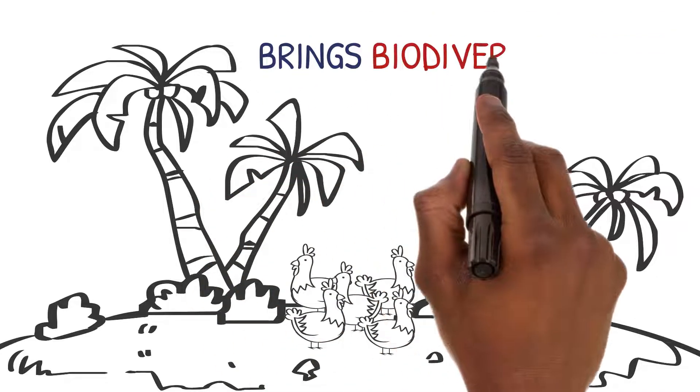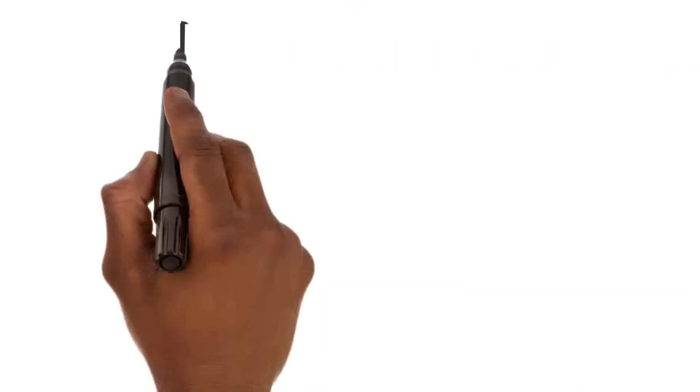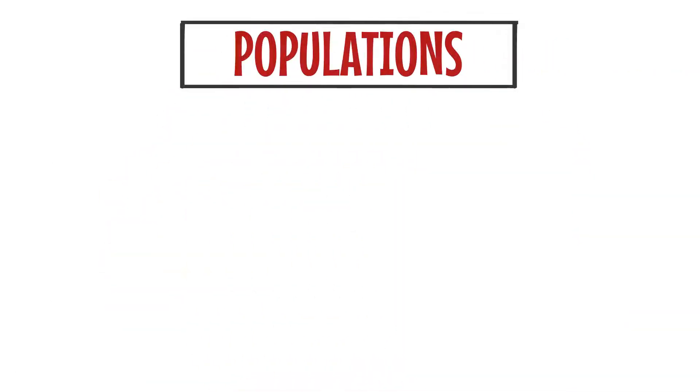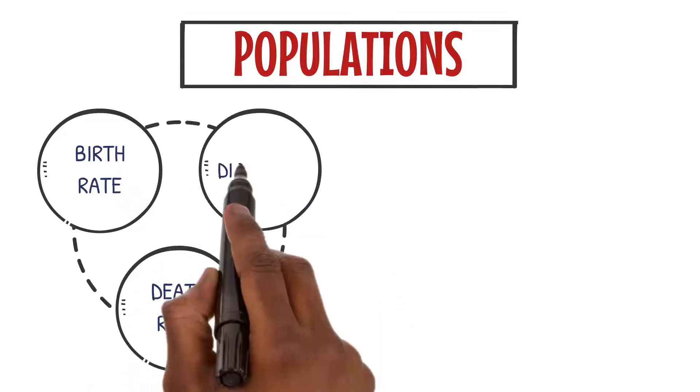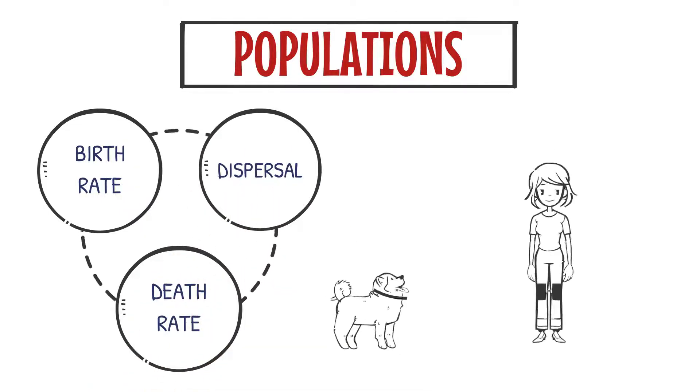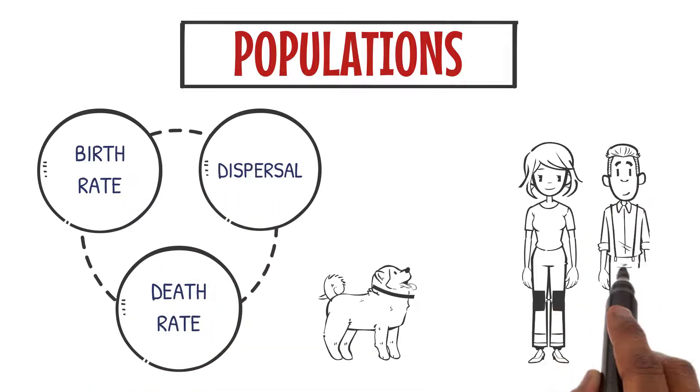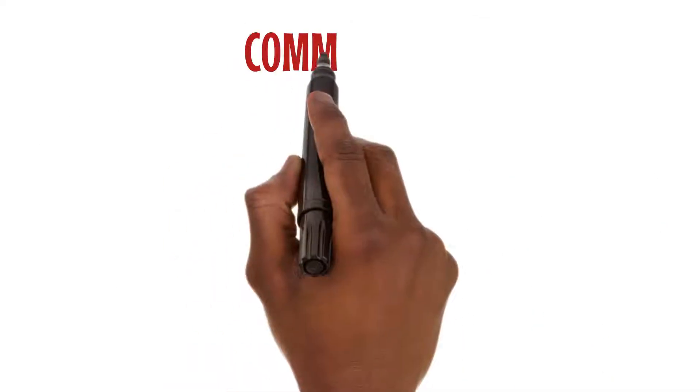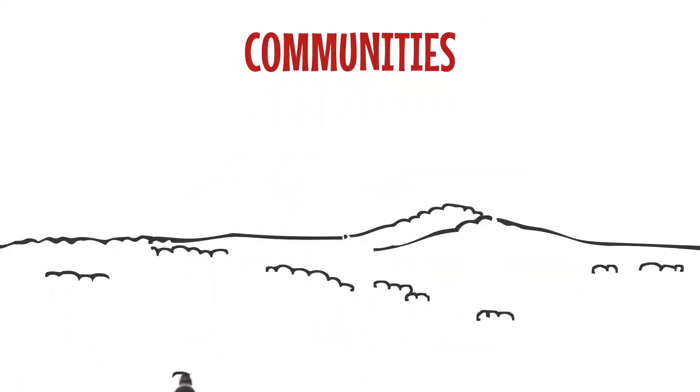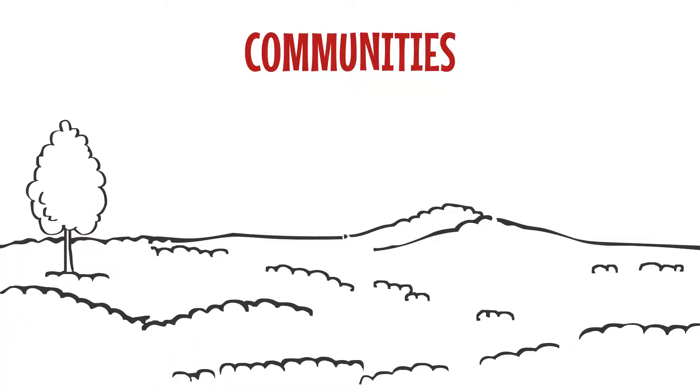Zooming in on populations, we discover the dynamics of birth rate, death rate, and dispersal. These factors shape the growth and distribution of individuals within a species. Communities are bustling neighborhoods where different species coexist and interact.